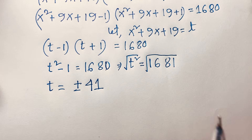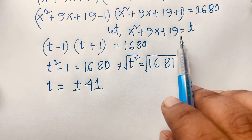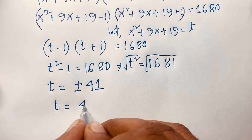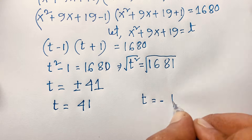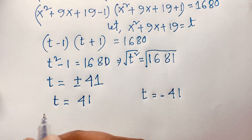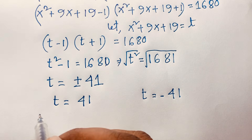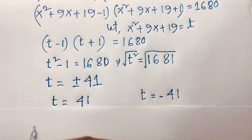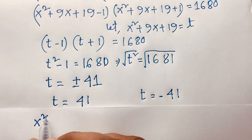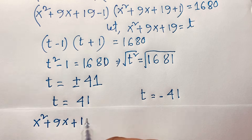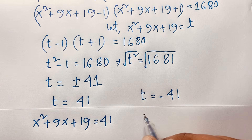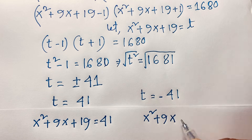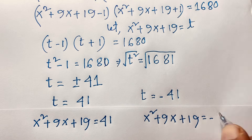Recall that t = x² + 9x + 19. So we substitute back. We have t = +41 giving x² + 9x + 19 = 41, and t = −41 giving x² + 9x + 19 = −41.